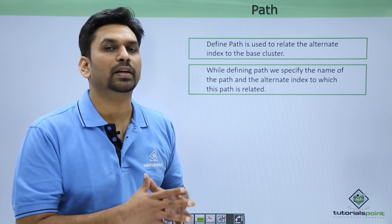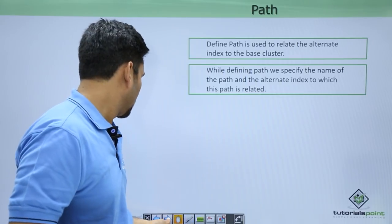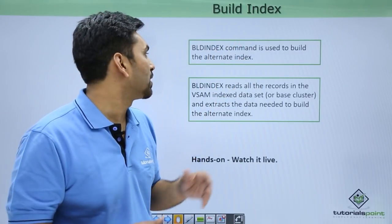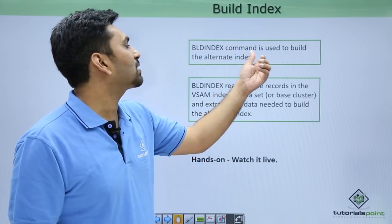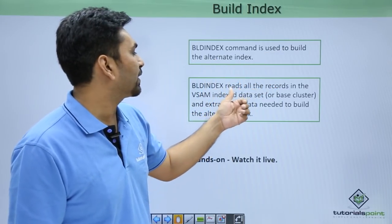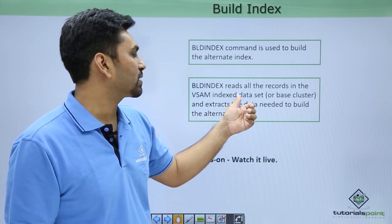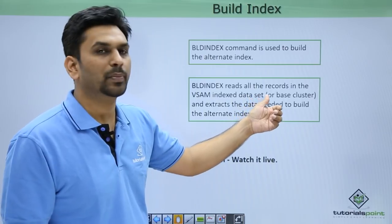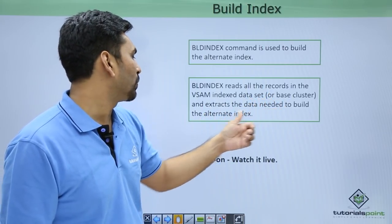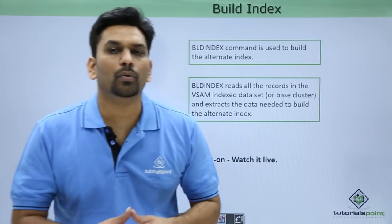The next step is to build the index. The BUILD INDEX command is used to build the alternate index. It reads all the records in the VSAM index data set or the base cluster and extracts the data needed to build the alternate index.